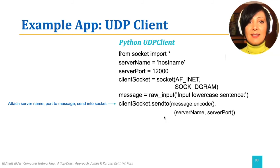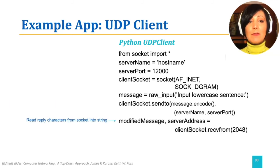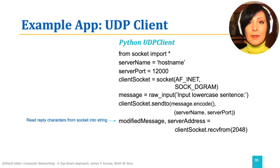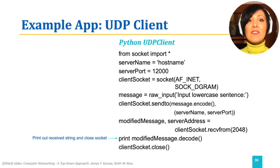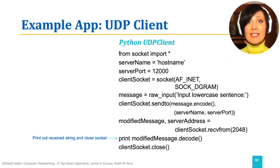After sending, the client waits for the response to be received from the server. The client listens on the client socket to receive a response; 2,048 is the buffer size. Finally, after the client receives the response, it decodes it to a string, prints the message on screen, and closes the client socket.